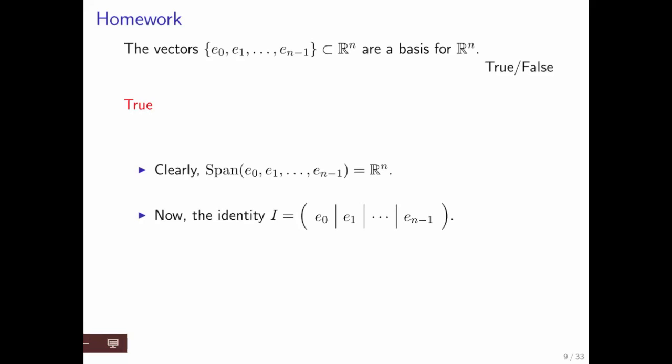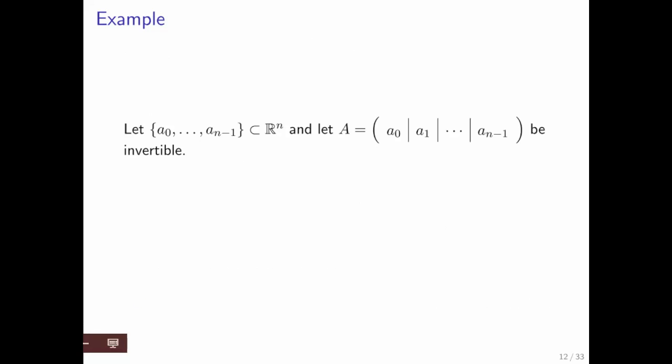If we take the identity matrix, that's the matrix that takes these vectors and makes them into the columns of the matrix, then we know that I times x equals zero only if x is the zero vector. What that means is that these vectors are linearly independent.